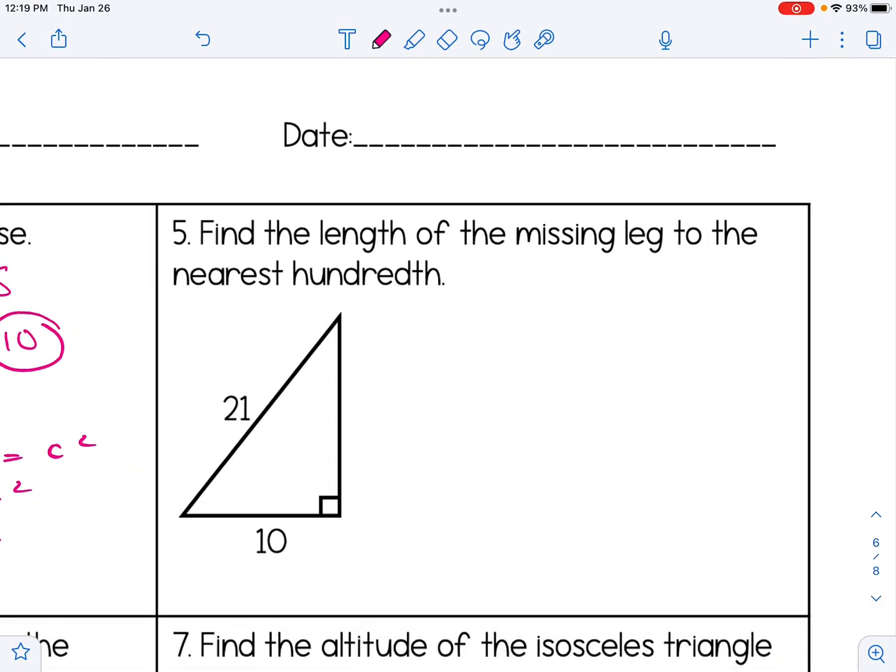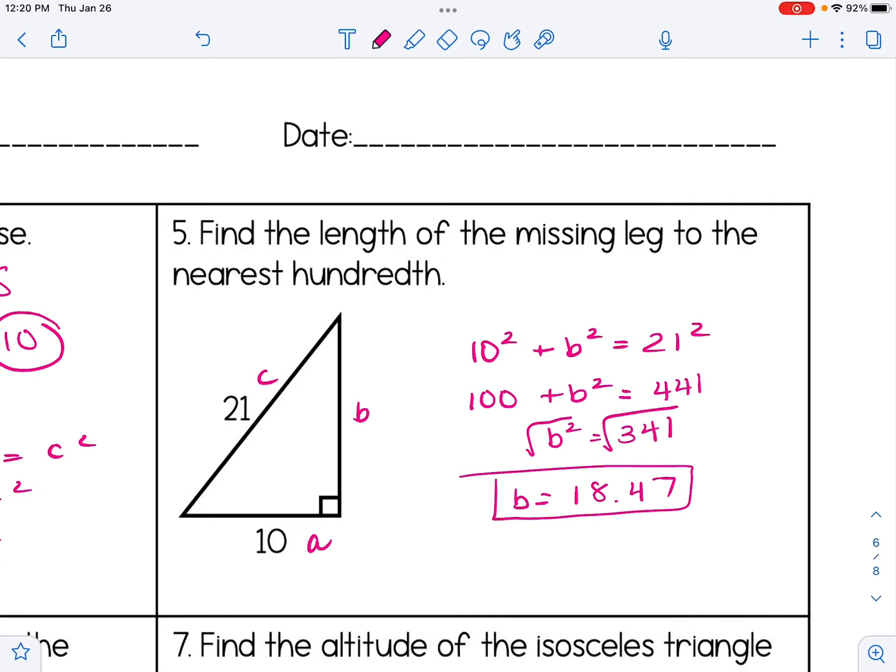Number five, find the length of the missing leg to the nearest hundredth. So I'm going to assign the 10 to be a and say that we're looking for b in this problem. But remember, if you chose to put 10 as b and the missing side as a, we'll get the same answer in the end. So I have 100 plus b squared equals 441. Subtract 100 onto the other side. And we're going to take the square root of 341. This problem is looking to the nearest hundredth, which is two decimal places, or two places past the decimal. So 18.47 once I put that into my calculator. I'm just taking the square root of 341 and rounding to two places past the decimal point.